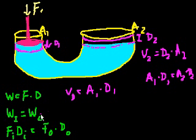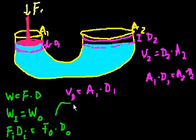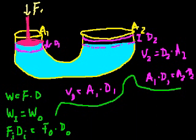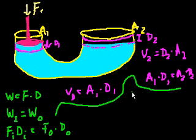So now we know that force-in times distance-in equals force-out times distance-out, and that A1 times D1 equals A2 times D2. Let's use these together — I'm going to rewrite each input force... actually I'm about to run out of time, so I'll continue this in the next video. See you soon.